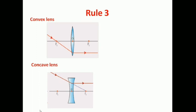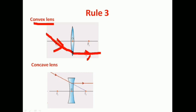Rule three — the third rule. In the case of a convex lens, when a ray of light is passing through its principal focus, one ray is incident. After refraction, it will pass parallel to the principal axis. In the case of a convex lens, it will pass parallel to the principal axis. This is the third rule.